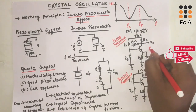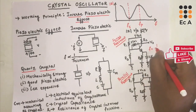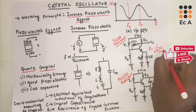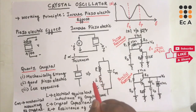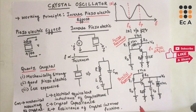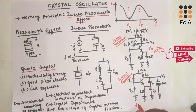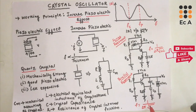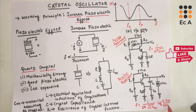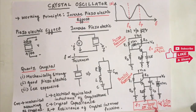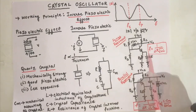The frequency of oscillation of the series resonant circuit is f = 1 / (2π√(LC)), depending upon L and C values in the equivalent circuit. The frequency of oscillation of the parallel resonant circuit is f = 1 / (2π√(L·C_eq)), where C_eq = (C × Cm) / (C + Cm) because C and Cm are connected in parallel. These are the resonating frequencies of the series and parallel resonant circuits. This is all about crystal oscillators — hope you have understood the topic. Thank you.